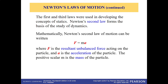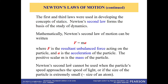Mathematically, Newton's second law can be written as F = ma, where F (in red, indicating a vector) is the resultant unbalanced force acting on the particle, a is the acceleration of the particle, and m is the positive scalar mass. Newton's second law cannot be used when the particle speed approaches the speed of light or if the particle size is extremely small, approximately the size of an atom.